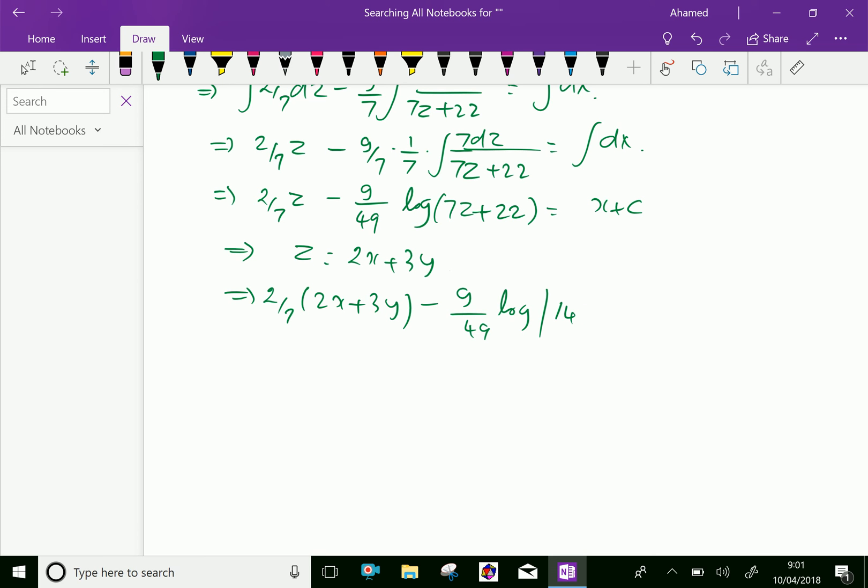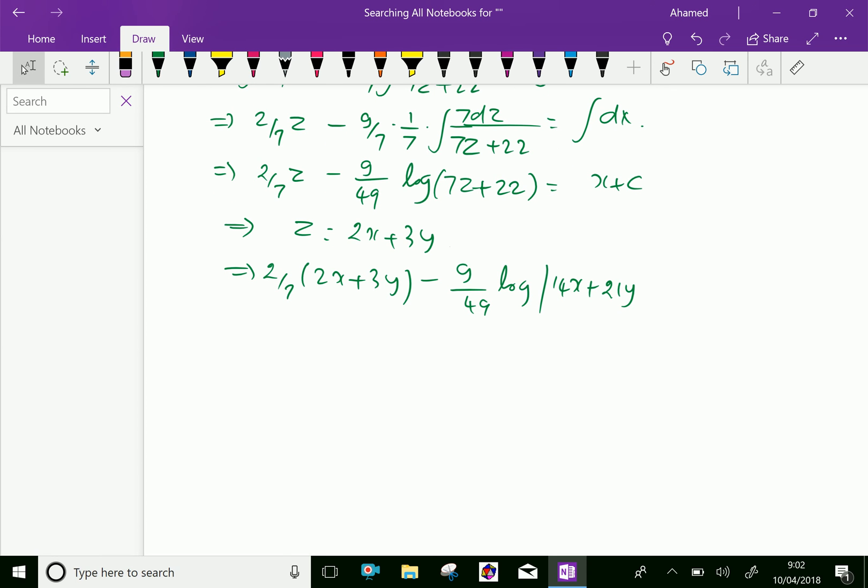We are substituting the value of z: 7 times 2x + 3y is 14x + 21y, plus 22 equals x + c. This is the required solution.